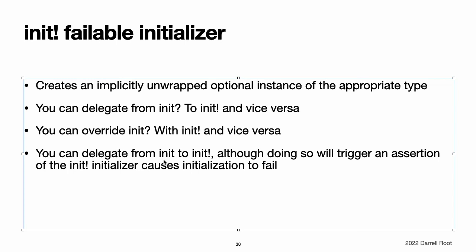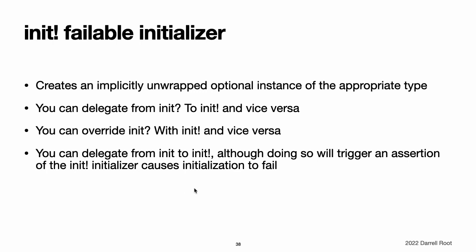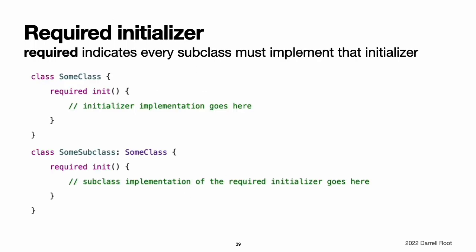You can delegate from an initializer to an implicitly unwrapped failable initializer, although doing so will trigger an assertion if the failable initializer causes initialization to fail. Required initializers. Write the required modifier before the definition of a class initializer to indicate that every subclass of the class must implement that initializer. You must also write the required modifier before every subclass implementation of a required initializer to indicate that the initializer requirement applies to further subclasses in the chain. You do not write the override modifier when overriding a required designated initializer. You do not have to provide an explicit implementation of a required initializer if you can satisfy the requirement with an inherited initializer.